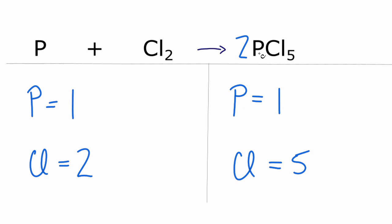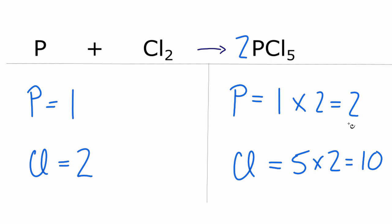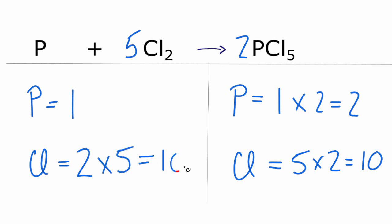That means it's going to be two times the phosphorus and two times the chlorine. So five times two equals ten, and then one times two equals two. Now we have even numbers, and we can come over to the reactant side. To get ten chlorine atoms, we put a five in front of the chlorine — two times five equals ten. So we've balanced the chlorine atoms.